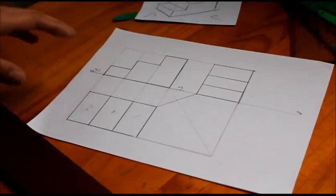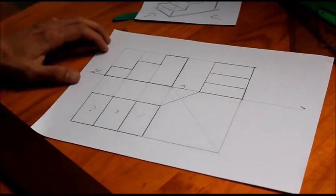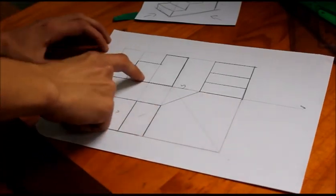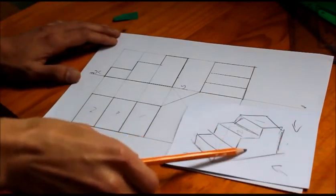So this here is just simply a very simple orthographic projection and it contains a front elevation. This is our 3D. Contains a front elevation which is this whole surface here.